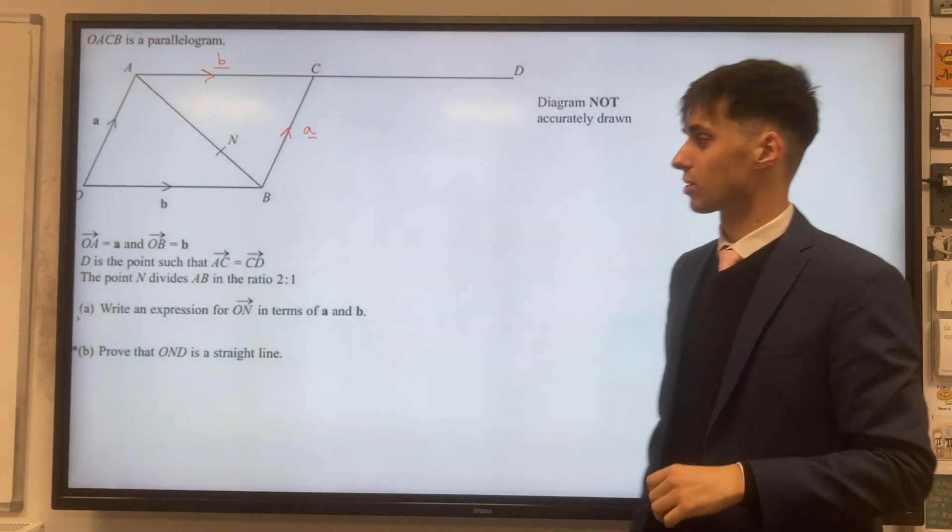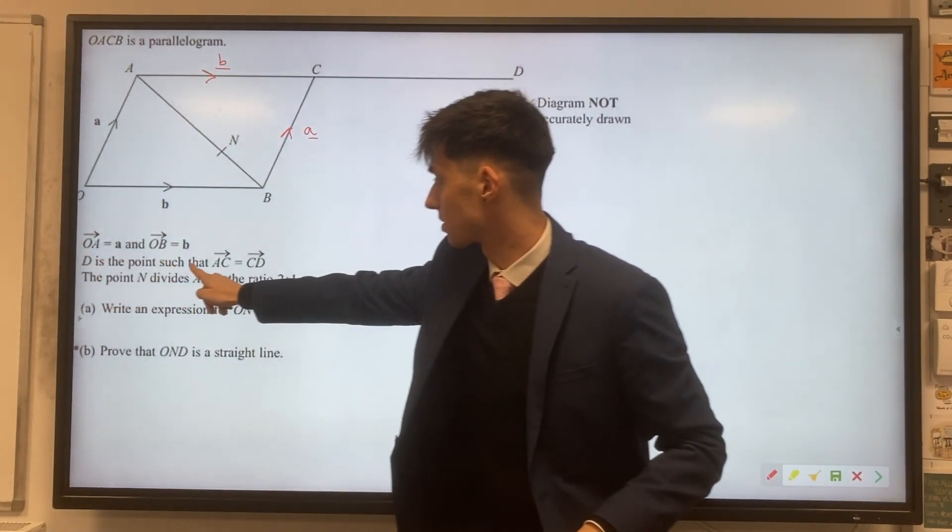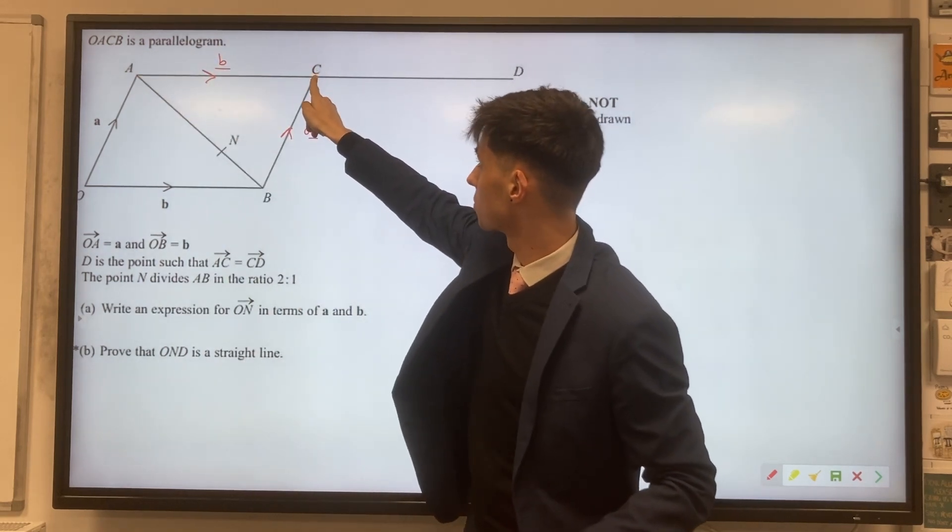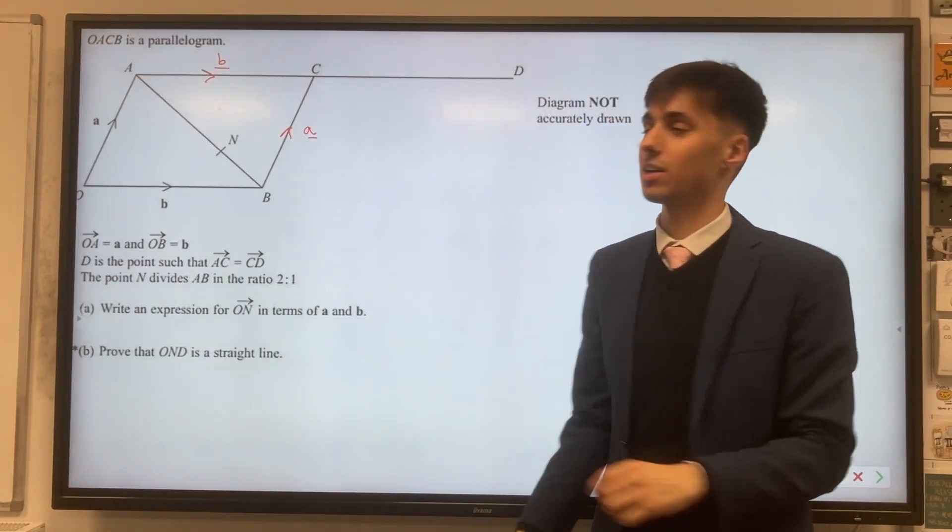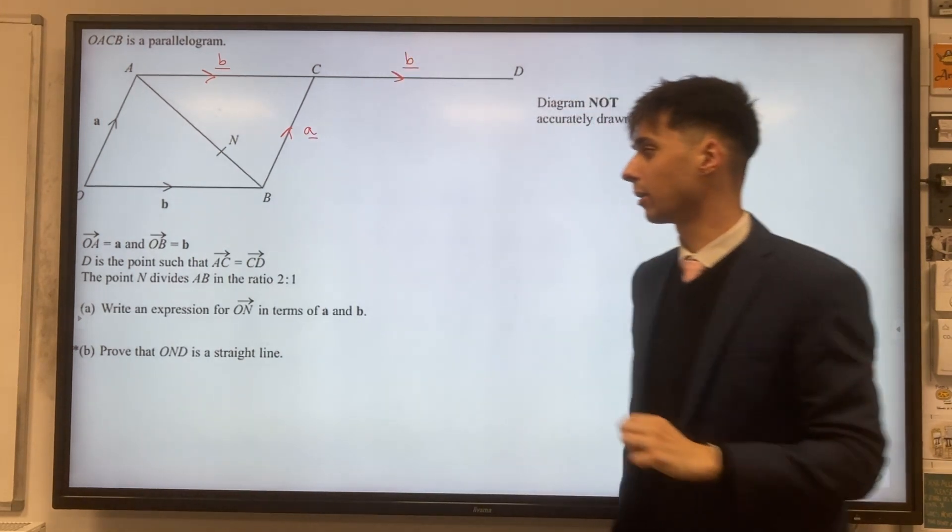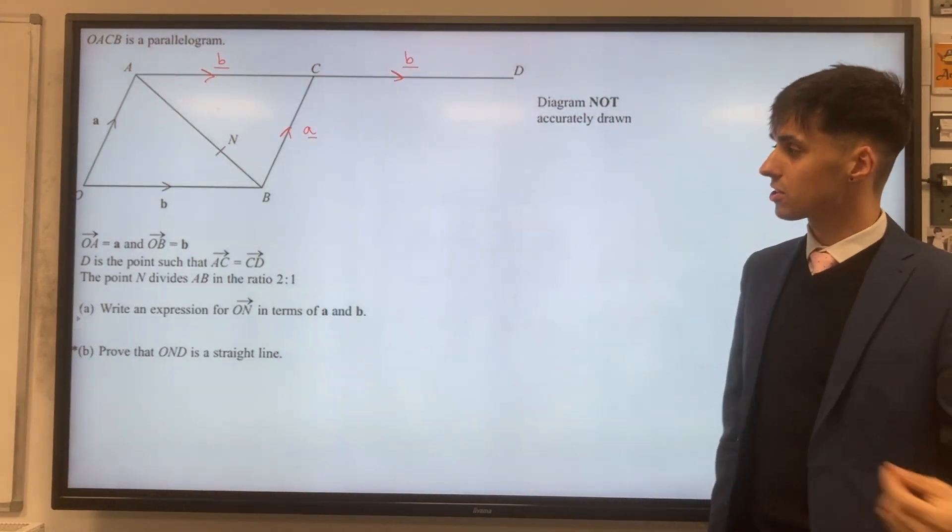Another interesting thing to note is that D is the point such that AC, so this vector, is equal to CD, which is this vector. So let's add another b vector in here.